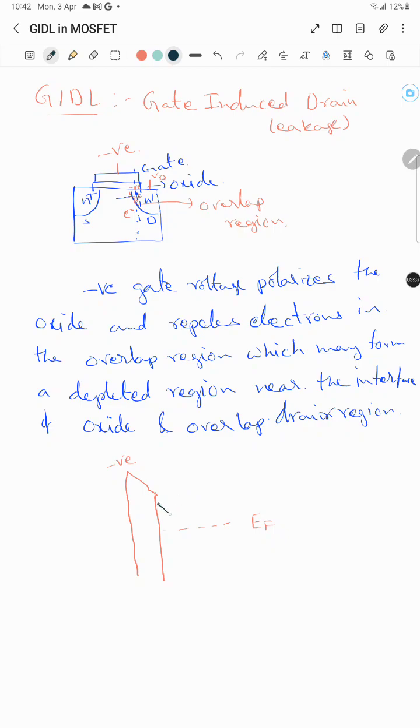In the bulk it is N+, so the conduction band will be at N+. Here it is depleted region, and the valence band, if you apply a high negative voltage...